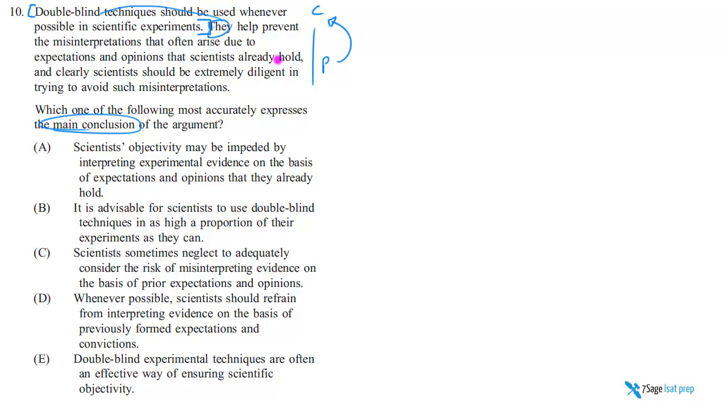And it does. You might not be persuaded, but it's at least trying to be persuasive why double-blind technology should be used whenever possible, because it helps to prevent scientists from misinterpreting stuff. So now we are fairly certain that this is the conclusion.